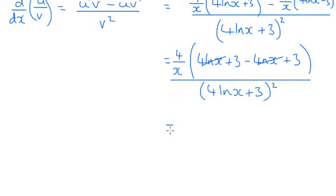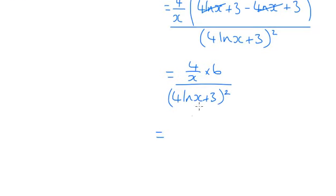So we've got 4 over x times by 6 on the top, divided by 4 ln x plus 3 squared on the bottom, which is 24 over x over 4 ln x plus 3 all squared. Now that looks very messy.